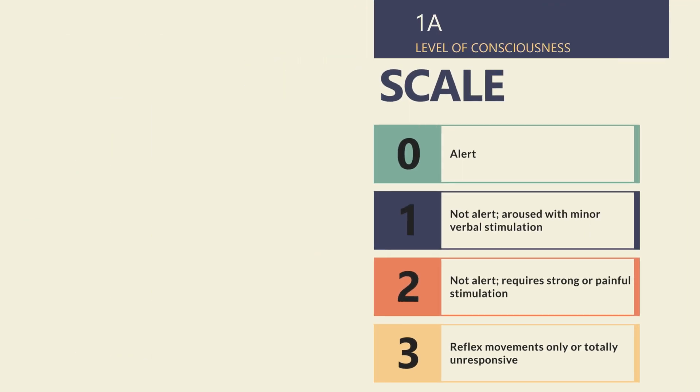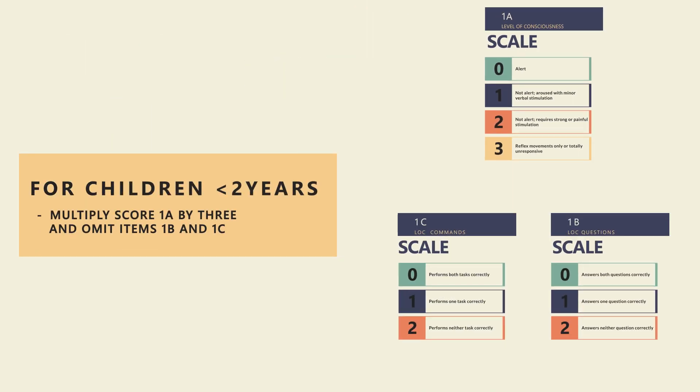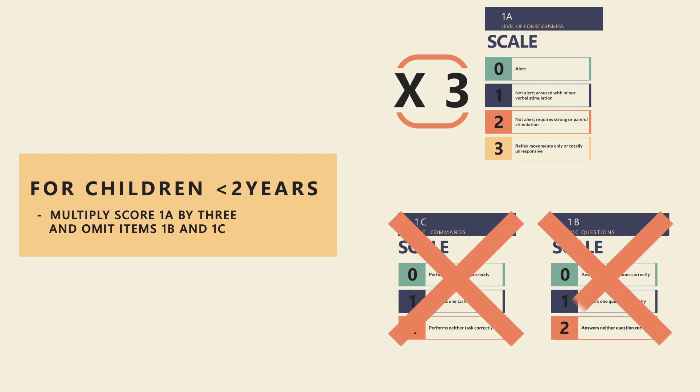For infants aged four months up to two years, multiply the score for this item by three, and omit scoring items 1B and 1C.